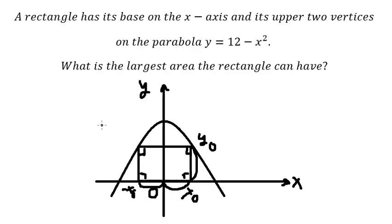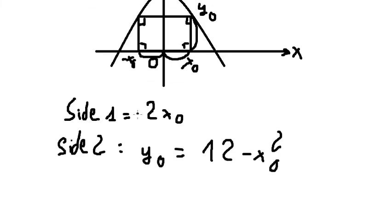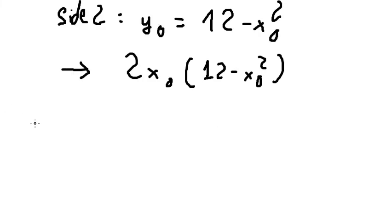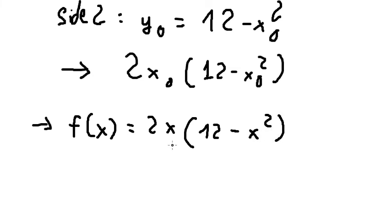So we want to find the largest area, so side number one multiplied by side number two. Now we can consider the function: f(x) = 2x(12 - x²) = 24x - 2x³.